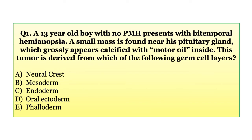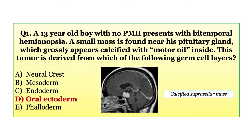Question 1: A 13-year-old boy with no past medical history presents with bitemporal hemianopsia. A small mass is found near his pituitary gland, which grossly appears calcified with motor oil inside. This tumor is derived from which of the following germ cell layers? Neural crest, mesoderm, endoderm, oral ectoderm, or phalloderm? The answer is D — oral ectoderm. This is a craniopharyngioma in a kid with bitemporal hemianopsia and the classic motor oil fluid in a hypothalamic suprasellar tumor. These tumors come from surface or oral ectoderm.